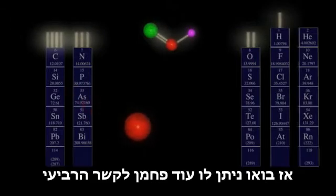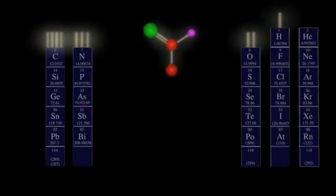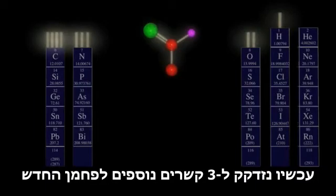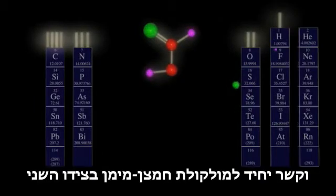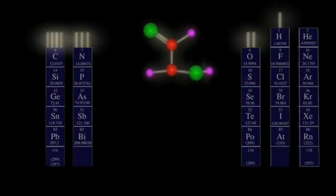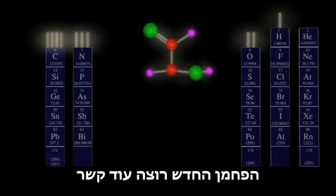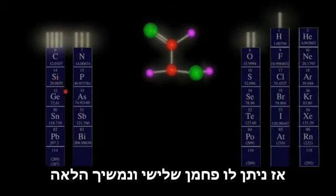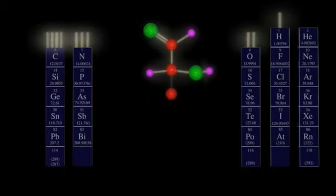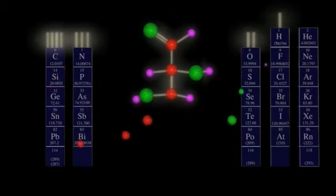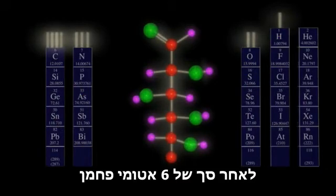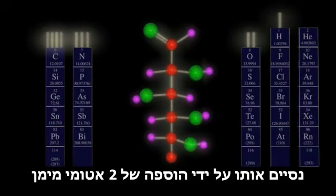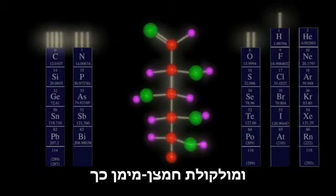So let's give it another carbon for its fourth bond. But now we need three more bonds for the new carbon, so we stick hydrogen on one side and a single bond to an OH molecule on the other. Now this new carbon wants another bond, so we give it a third carbon and keep going. After a total of six carbon atoms, let's end it by adding two hydrogen atoms and an OH molecule like this.